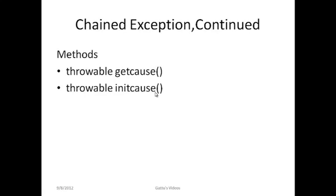Chained exceptions also provide two methods: getCause and initCause. Throwable is the return type for both methods. The getCause method returns the exception that underlies the current exception, and if there is no underlying exception it returns null.